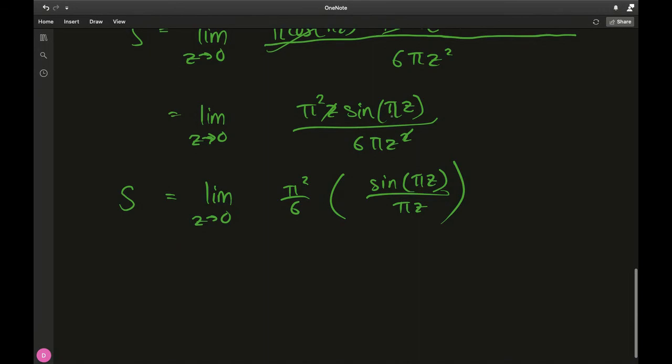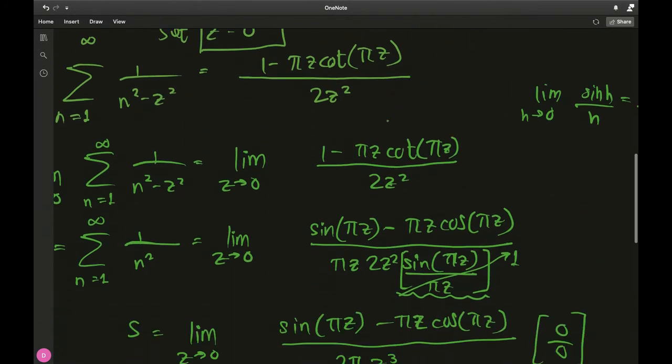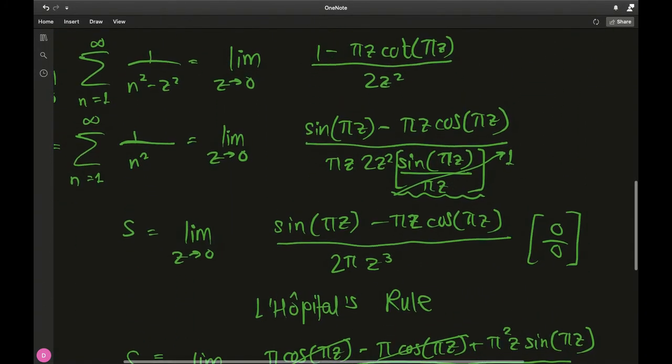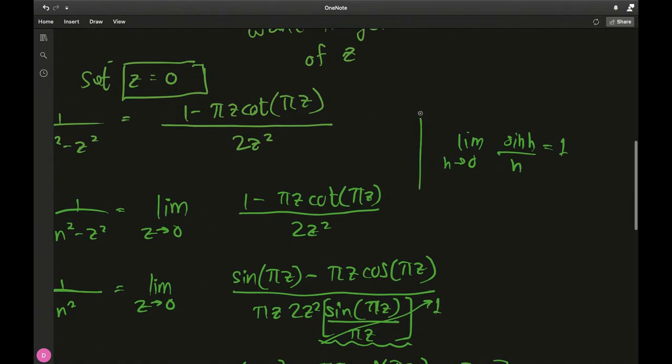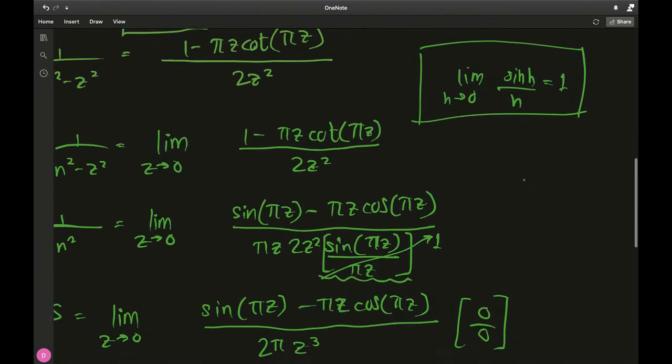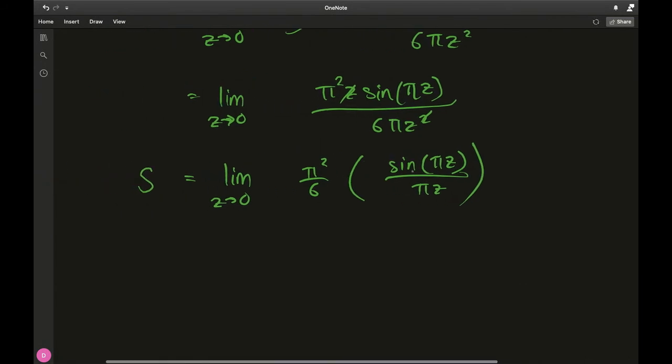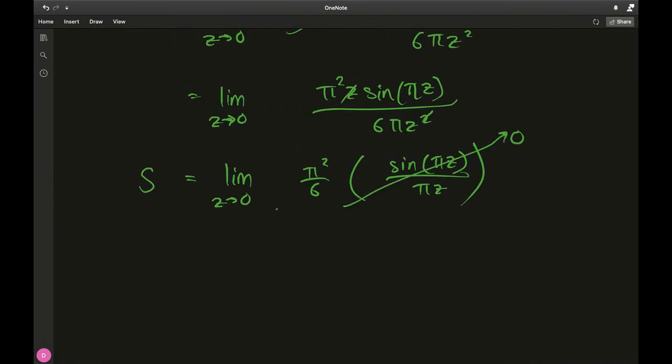Because π squared over 6 and πz just to recreate this scene over here based on this identity of trigonometric functions in limits, this will go to 1 in the limit as z goes to 0, πz will go to 0, that's why this entire thing will go to 1, not 0.